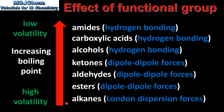Here we have a summary of the effect of the functional group on the boiling point. At the bottom we have the alkanes, the alkenes and the alkynes — these have London dispersion forces between the molecules, so they have low boiling points and high volatility. Next we have the esters, the aldehydes and the ketones — these have dipole-dipole forces between their molecules. At the top we have the alcohols, the carboxylic acids and the amides, which are able to form hydrogen bonds between the molecules, meaning they have higher boiling points and low volatility.